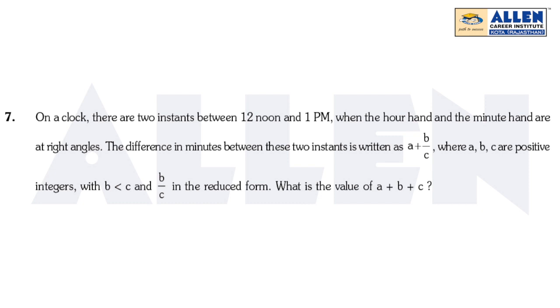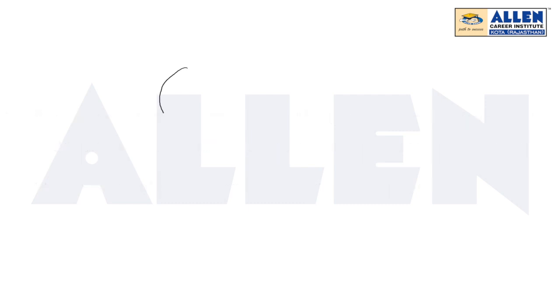The difference in minutes between these two instances is written as A plus B upon C, where A, B, C are positive integers with B less than C and B upon C in reduced form. What is the value of A plus B plus C? We have two instances from 12 to 1 PM where the hour hand and minute hand are at 90 degrees.